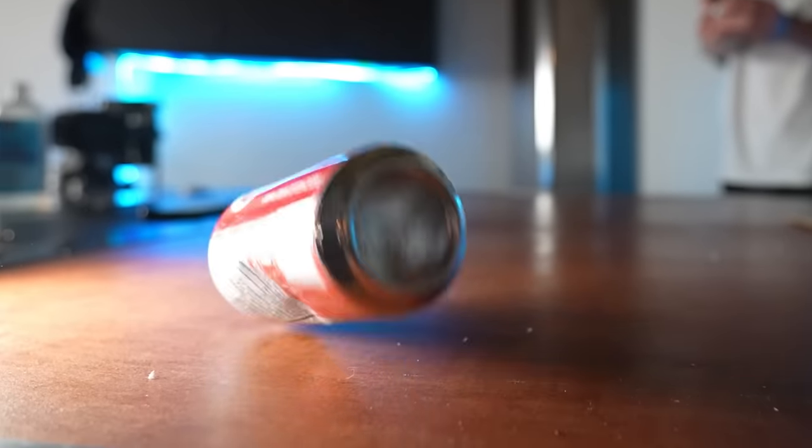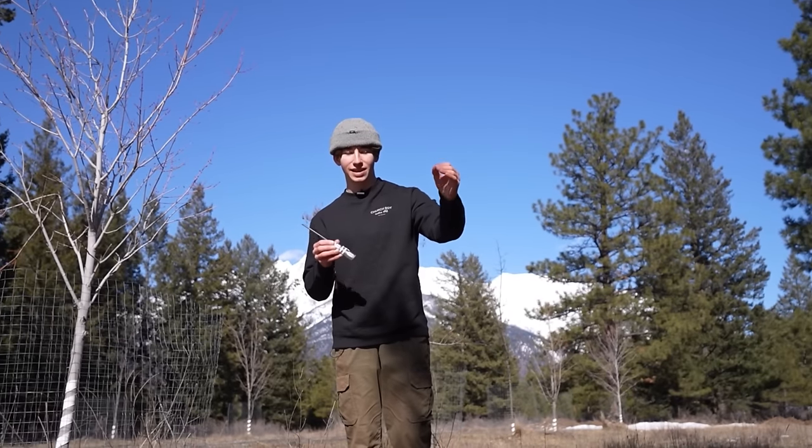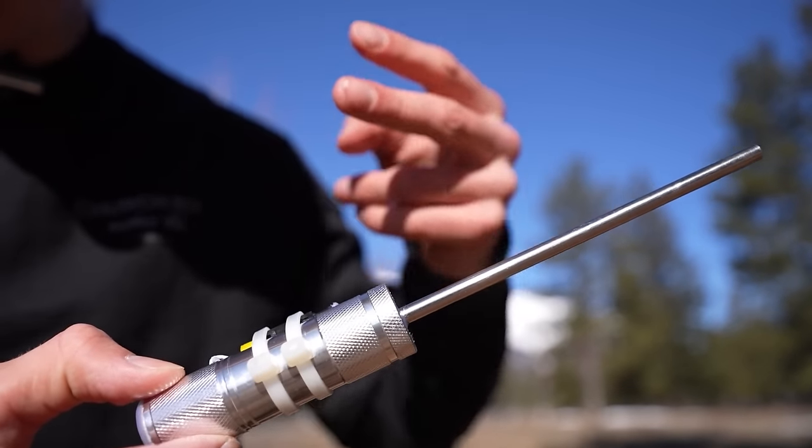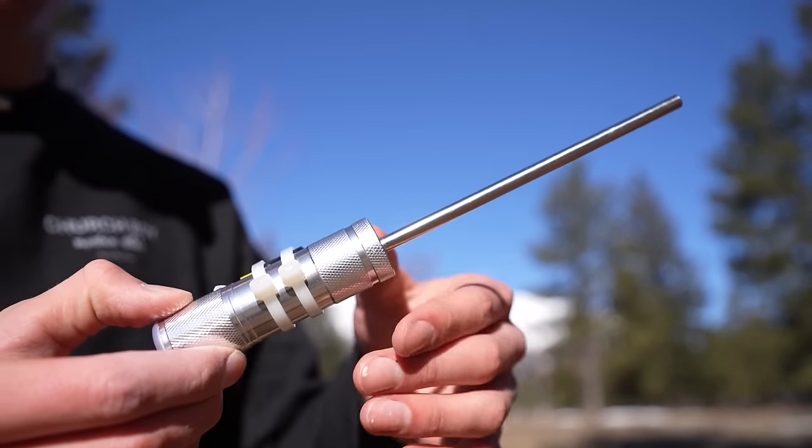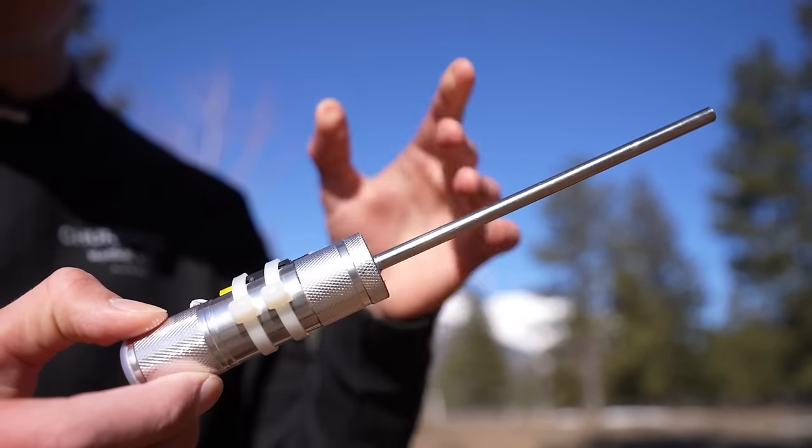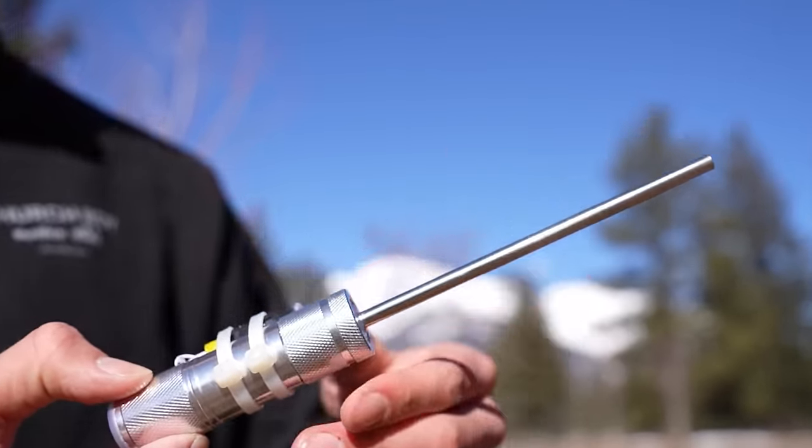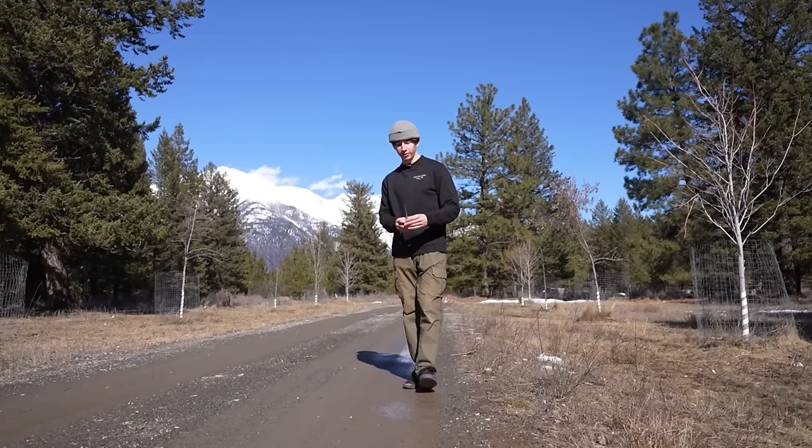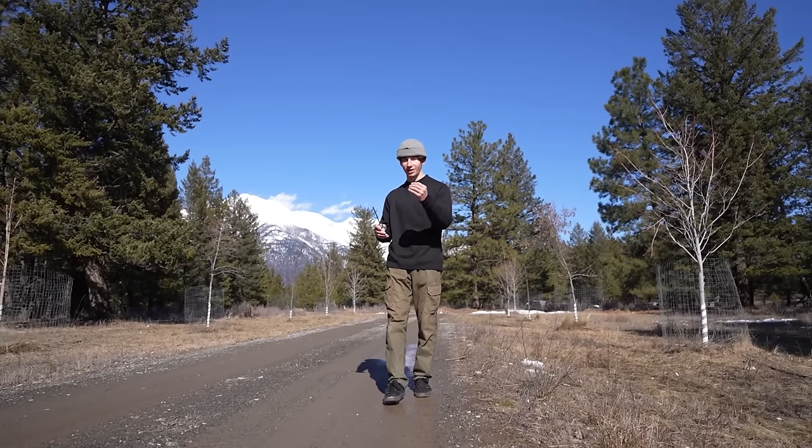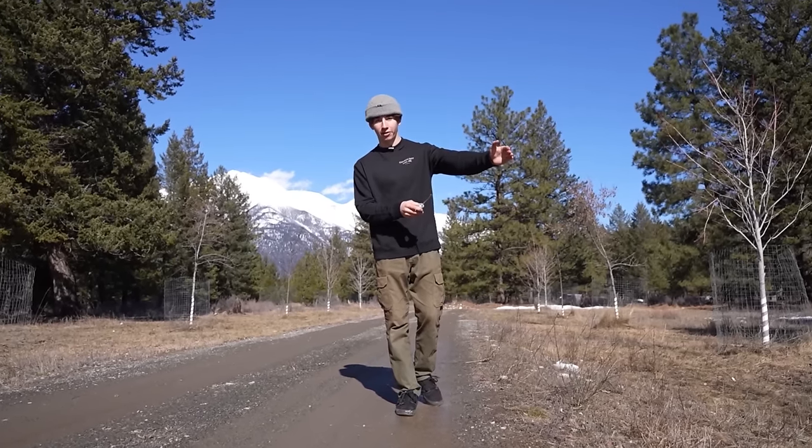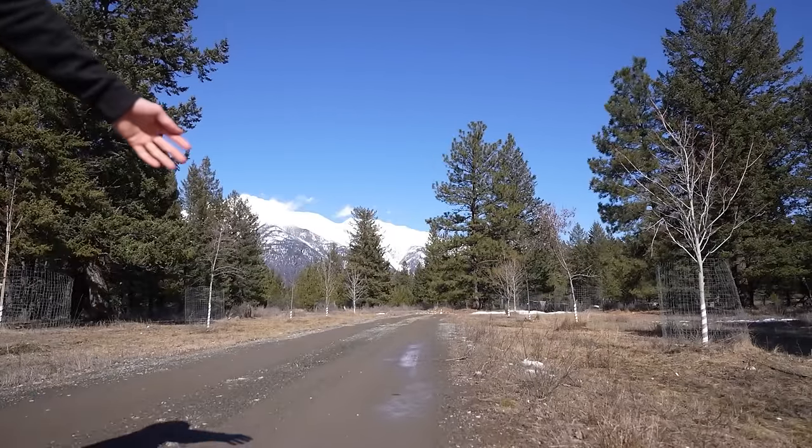I think in order to properly test it, we got to do a long range test and see how far it actually shoots. It's only about 2 degrees outside, which is kind of cold for rubbing alcohol to burn, so I'm thinking this is probably going to be a little bit underpowered. The road I'm standing on is about 100 feet long, so we should be able to see where the potato lands and also just be able to figure out how far it actually went. Let's give it a shot and see how far it goes.